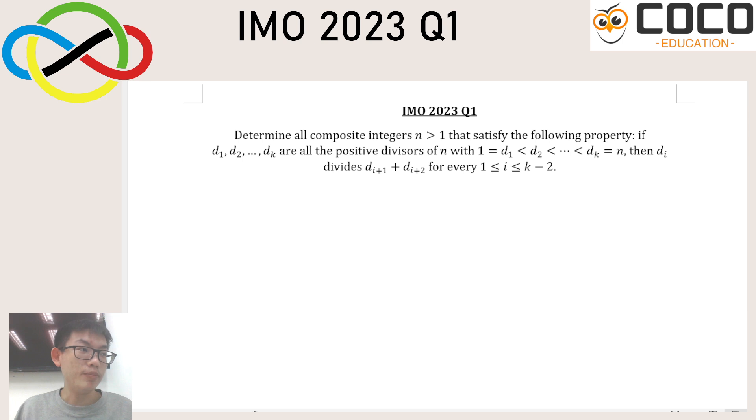For the IMO, it's important to understand that if you can fully solve one question, that would allow you to get an honorable mention already. Usually the first question will be the easiest one, and this is also going to be true for the IMO this year. It is not very difficult, and I would encourage you to give it a try, pause the video if you haven't already attempted this problem before.